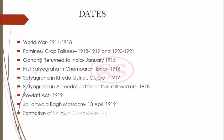Then in March 1919 the Khilafat Committee was formed by the Ali brothers in Bombay — Shaukat Ali and Muhammad Ali.